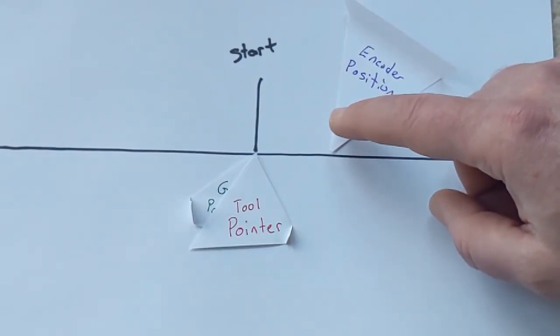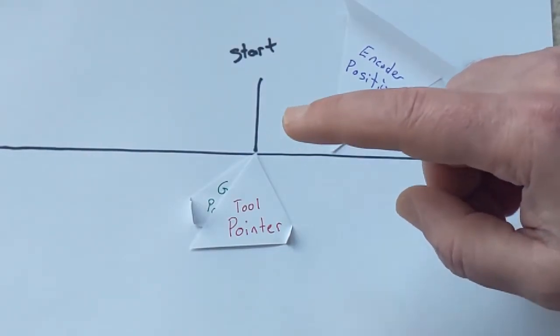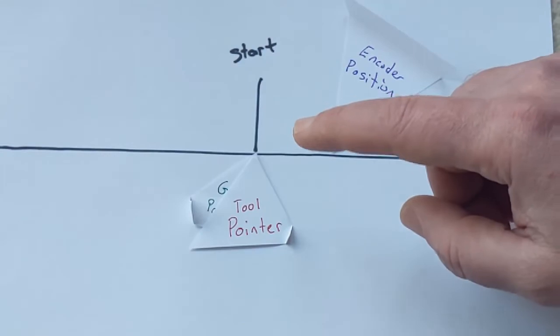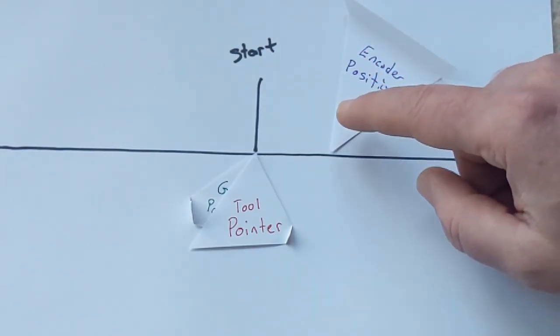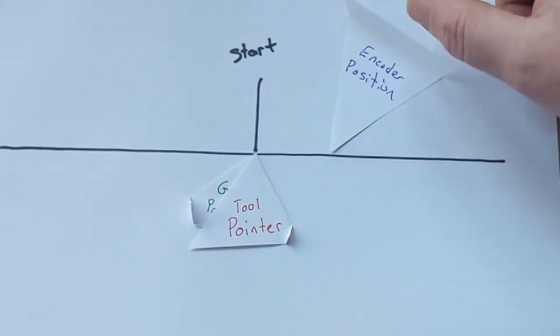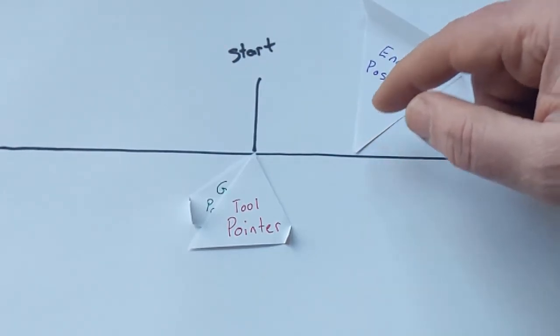So the encoder will start to move and it will basically make sure that wherever the start position is, so let's say you started on zero.